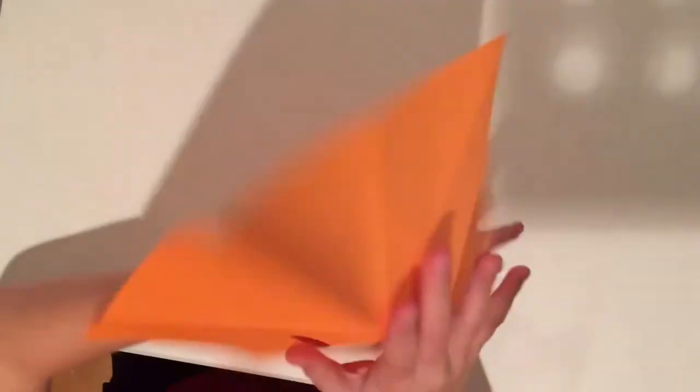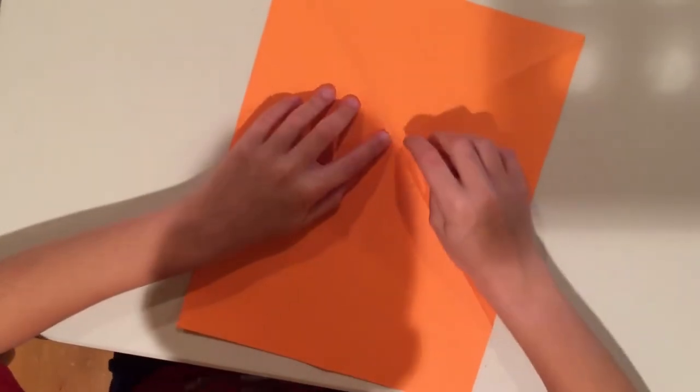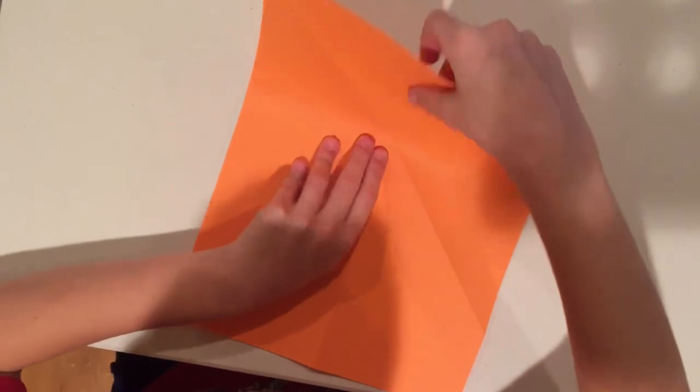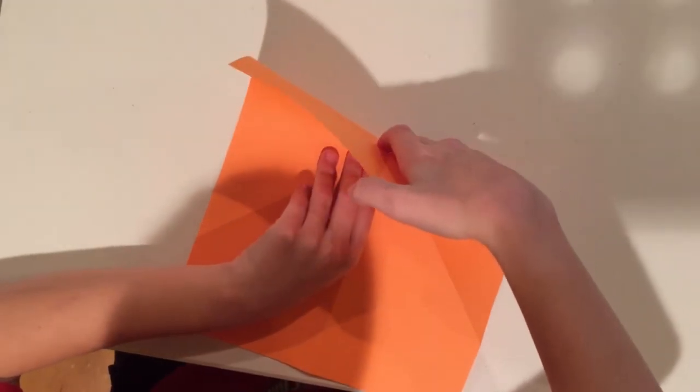Now we can flip it over and fold down where the X is intersecting, where all these creases intersect.